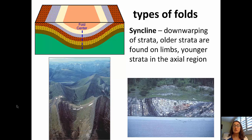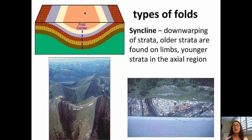Starting with the types of folds: a syncline is the down-warping of strata. In a syncline, the oldest layers are on the bottom — that would be the green rock — and the youngest are on top in the center. When that syncline forms and is eroded across the surface, walking from the axis — the center of the fold — out toward the limbs, one would walk from younger rock into progressively older rock. So young rock at the axial region, old rocks out on the limbs.